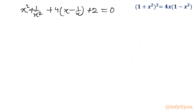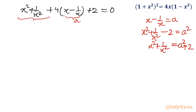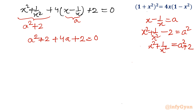Now I am going to use substitution. The substitution is obvious: let x - 1/x = a. Squaring both sides: x² + 1/x² - 2 = a², so x² + 1/x² = a² + 2. Substituting back: (a² + 2) + 4a + 2 = 0, which gives a² + 4a + 4 = 0.